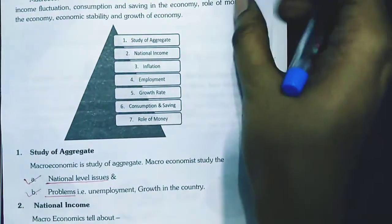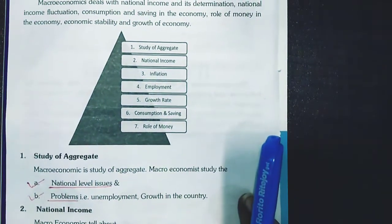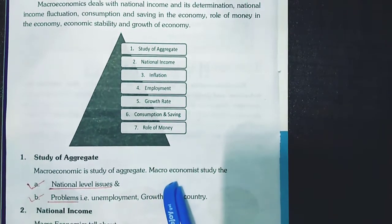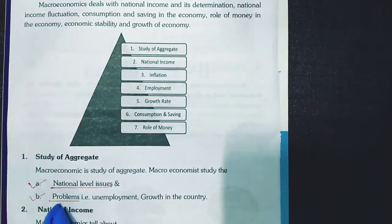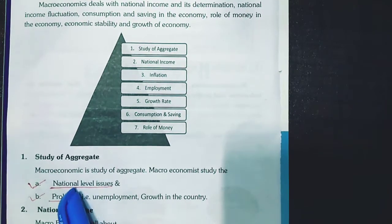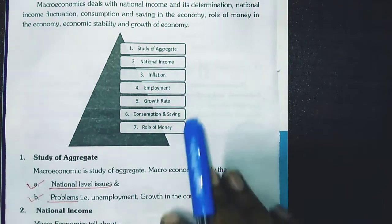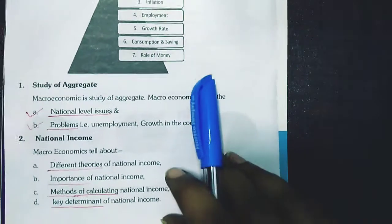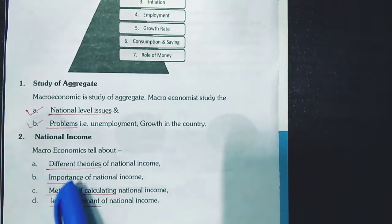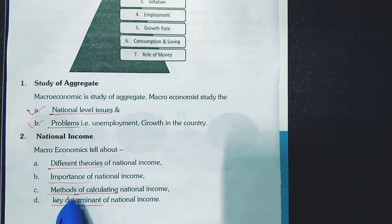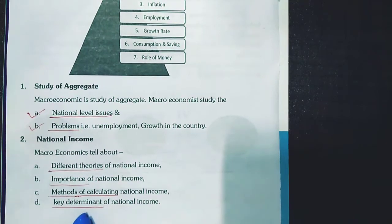The first point of scope is study of aggregate. Macroeconomics studies national level issues and problems because it has a wider scope. The second point is national income. Macroeconomics tells you about the different theories, importance, methods of calculation and key determinants of national income.